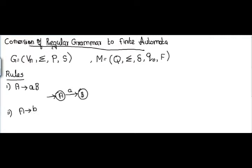Suppose I have a production A tends to a small letter b, where after the arrow there is only one small letter. In this case, I will draw state A as my present state, and if the input is b, I will introduce one more new state — for example, C — which becomes the final state. So if after the arrow there is only one terminal character, I introduce one more state as a final state.